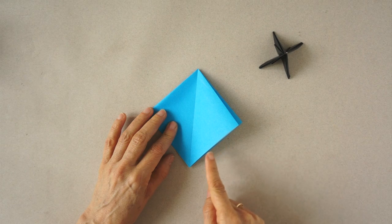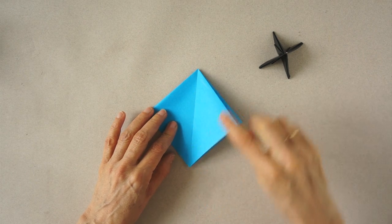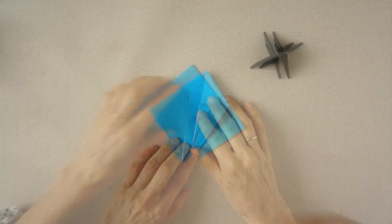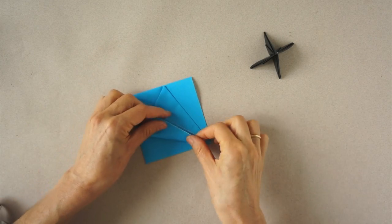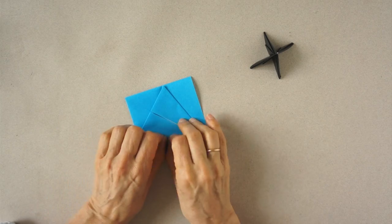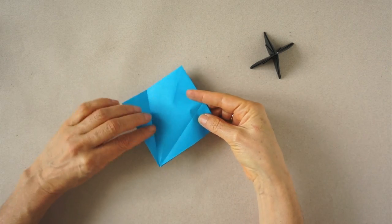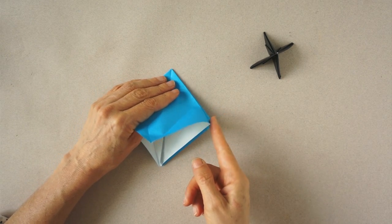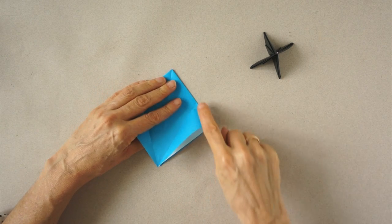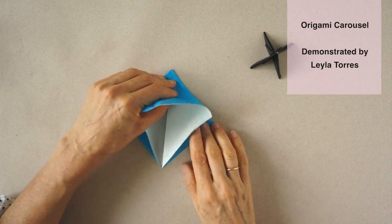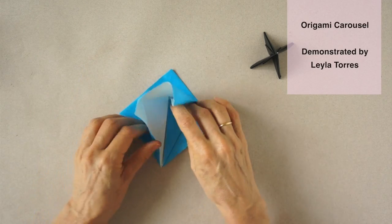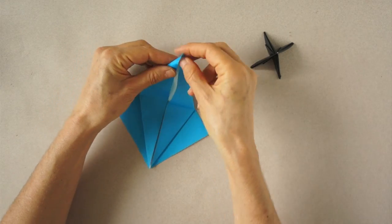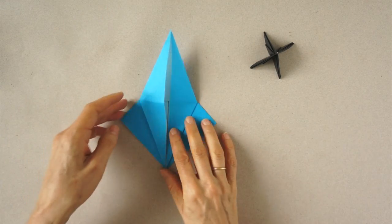We are going to bring the edge to the central vertical line. Same here. Unfold. Open the top flap and we are going to inside reverse this along the existing lines. This is a petal fold.